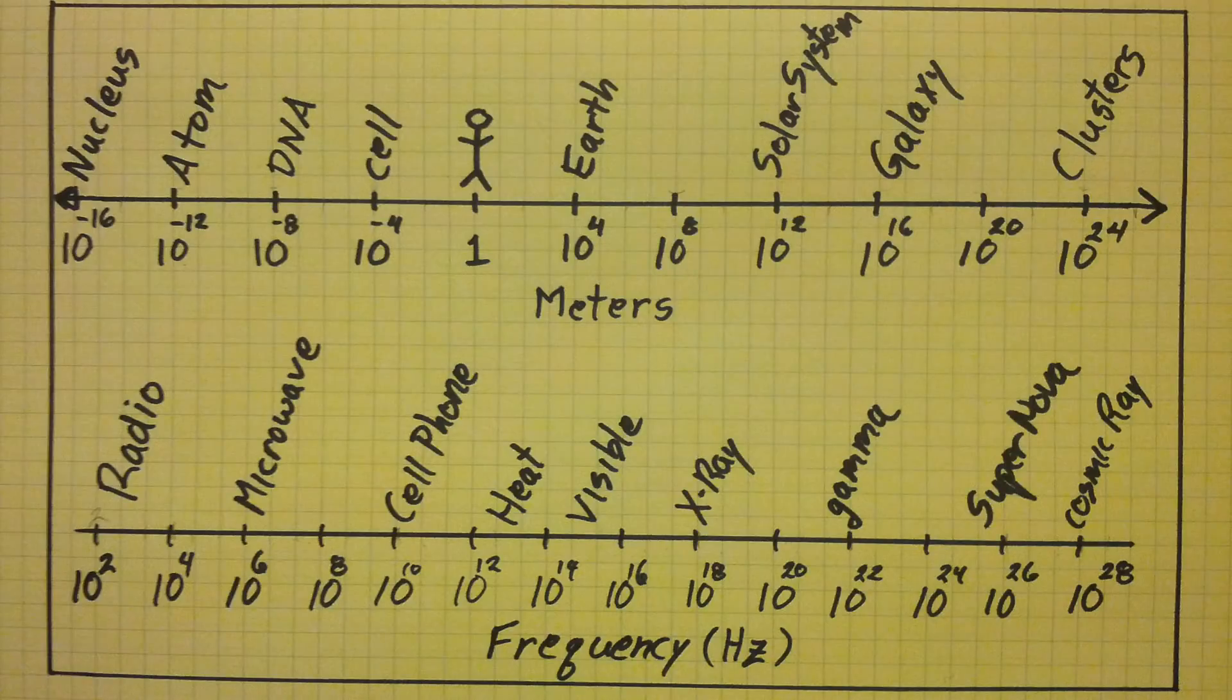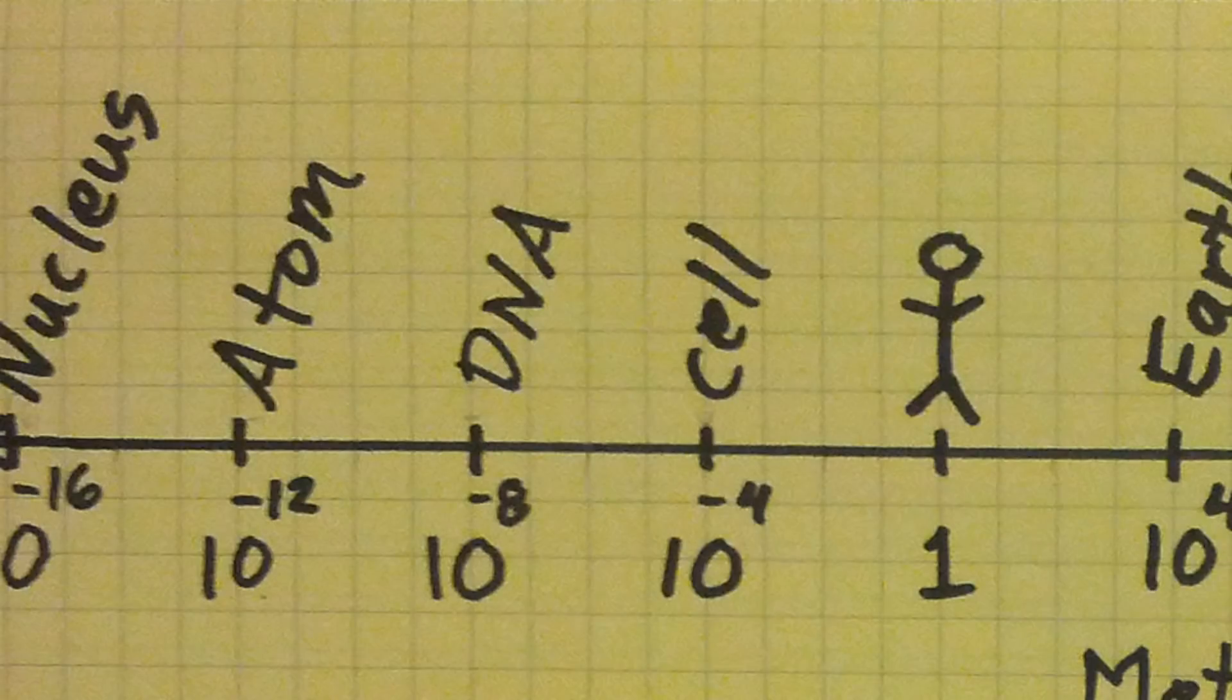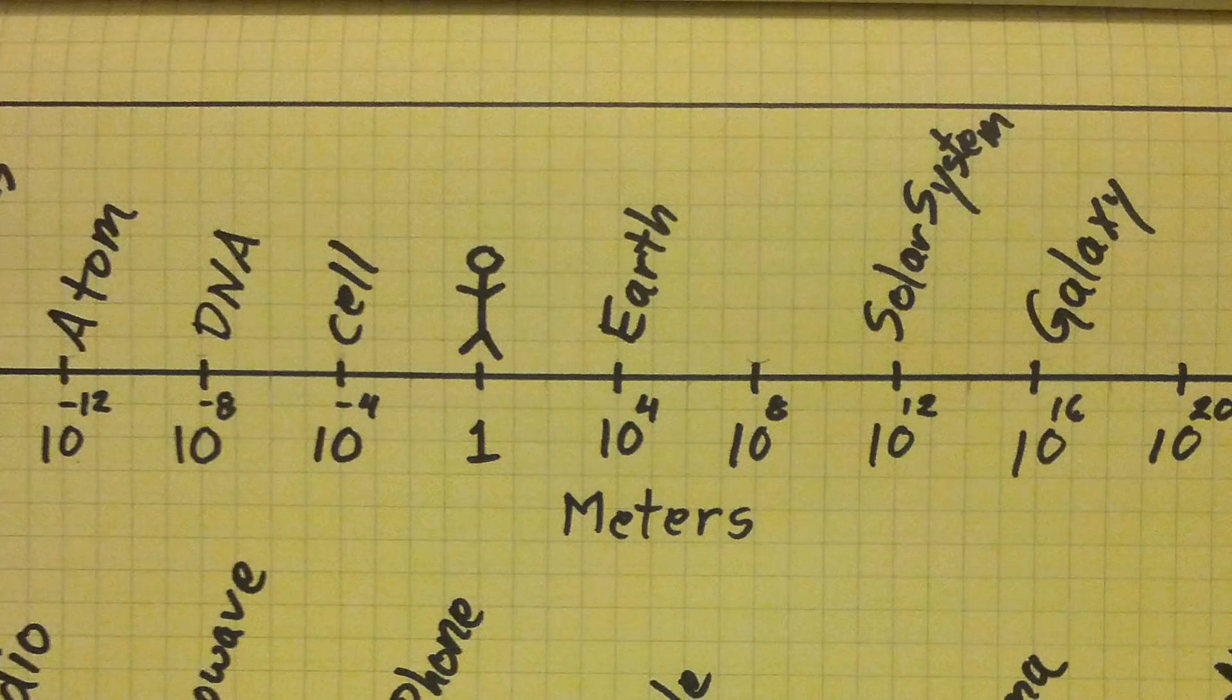Now, one thing you'll note about this diagram is that everything is on the same line. Well, what an assumption to think that the length of an atom is the same kind of length as the length of a man or the length of a galaxy.